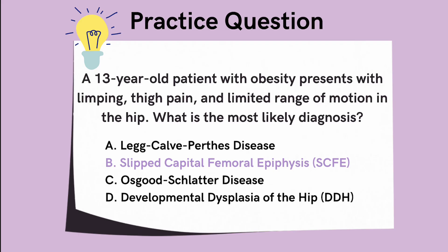The correct answer is B) Slipped Capital Femoral Epiphysis, or SCFE, which is a condition that occurs when the femoral head slips off the neck of the femur, typically in obese or rapidly growing adolescents. Symptoms include hip or thigh pain, limping, and limited range of motion.